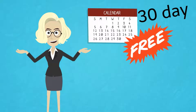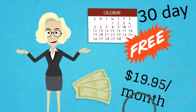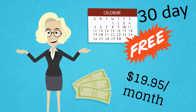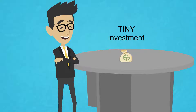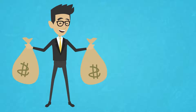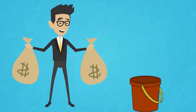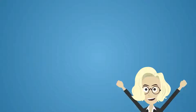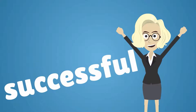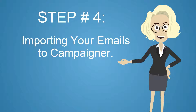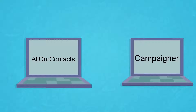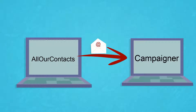We highly recommend that you use Campaigner as your bulk email distributor, as it integrates seamlessly with our list with no complications. They have a free 30-day trial period, and their service is very inexpensive, starting at only $19.95 a month. Just consider this to be a tiny investment. Once you're making real money, these initial investments will seem like dropping a few pennies in a bucket to get you a lifetime of returns on your investment. You can't go wrong with Campaigner, as they've proven to be successful for us month after month.